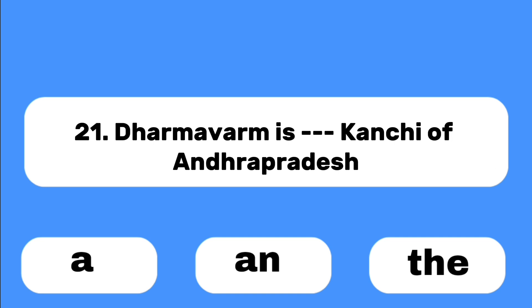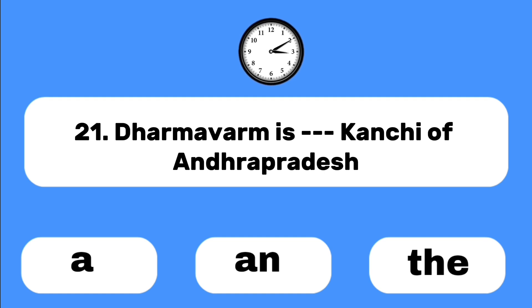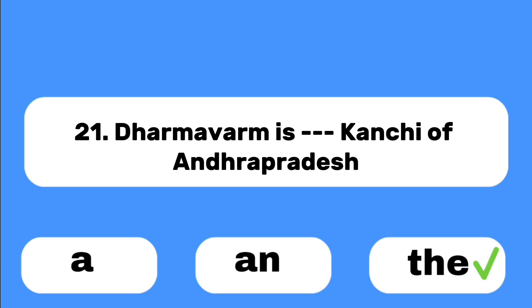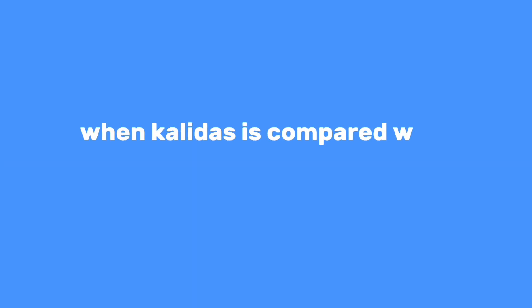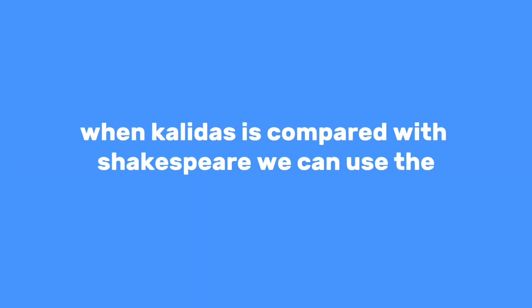Number twenty-one: Dharmavaram is ___ Kanchi of Andhra Pradesh. The definite article 'the' is used when two proper nouns are compared. When Kalidasa is compared with Shakespeare, you use 'the': Kalidasa is the Shakespeare of India.